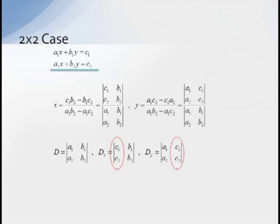Likewise, DY, the determinant in the numerator for Y, is the same as the determinant D, except the column of the coefficients of Y have been replaced by our constants.